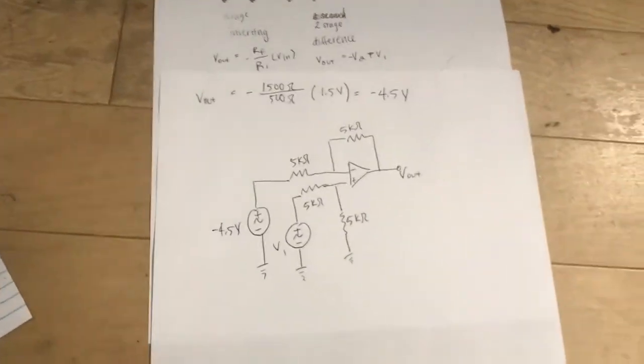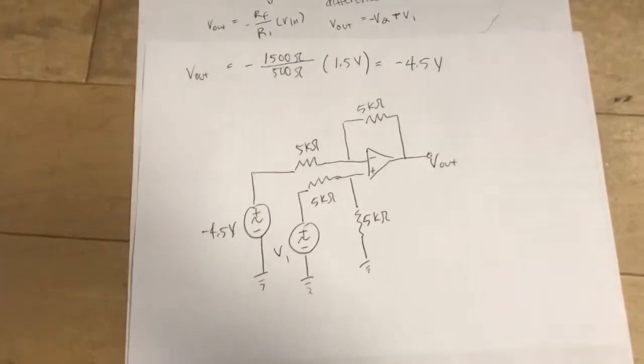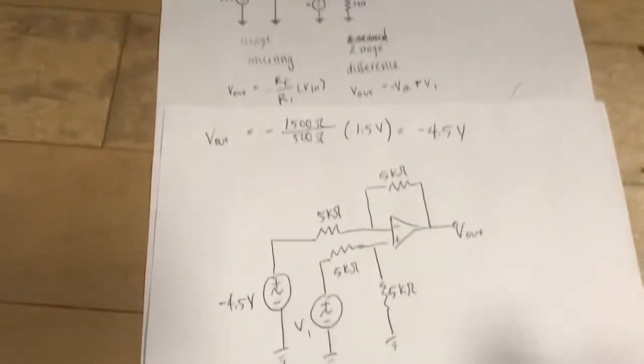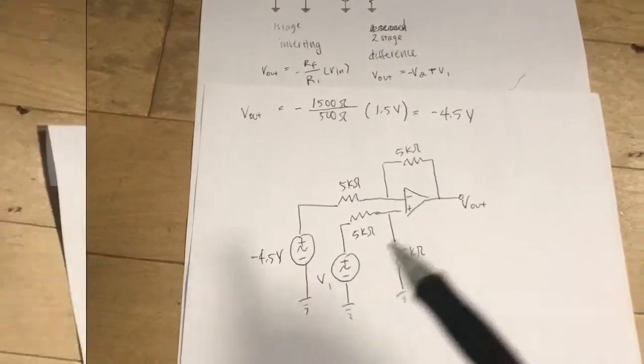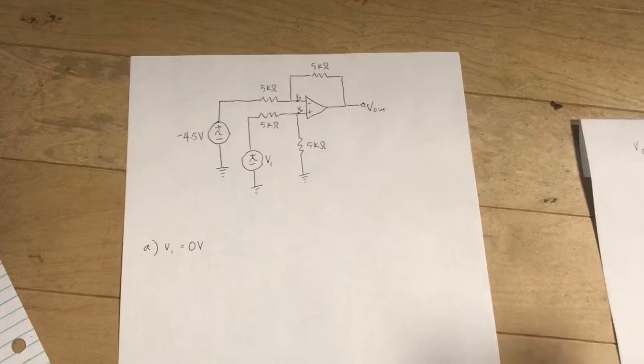So now we have simplified this second op amp, and it has a Vn. So here I have redrawn the circuit,